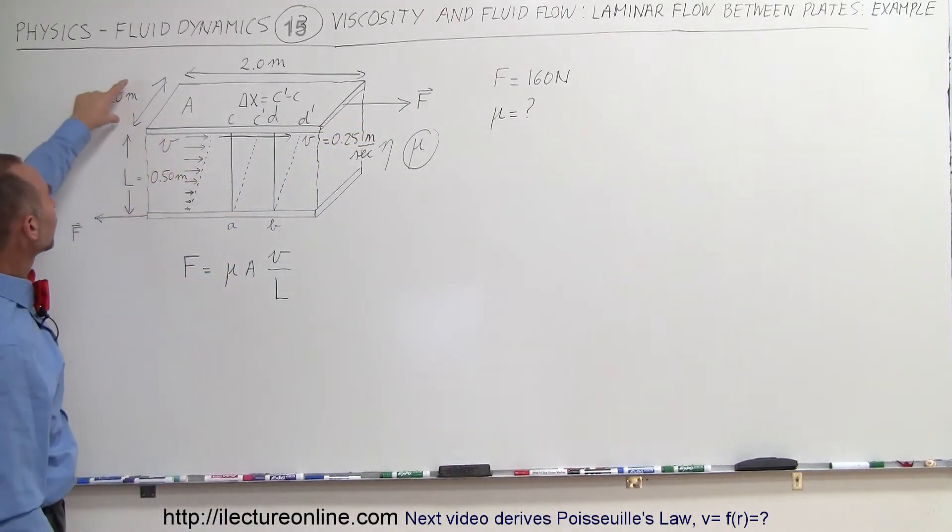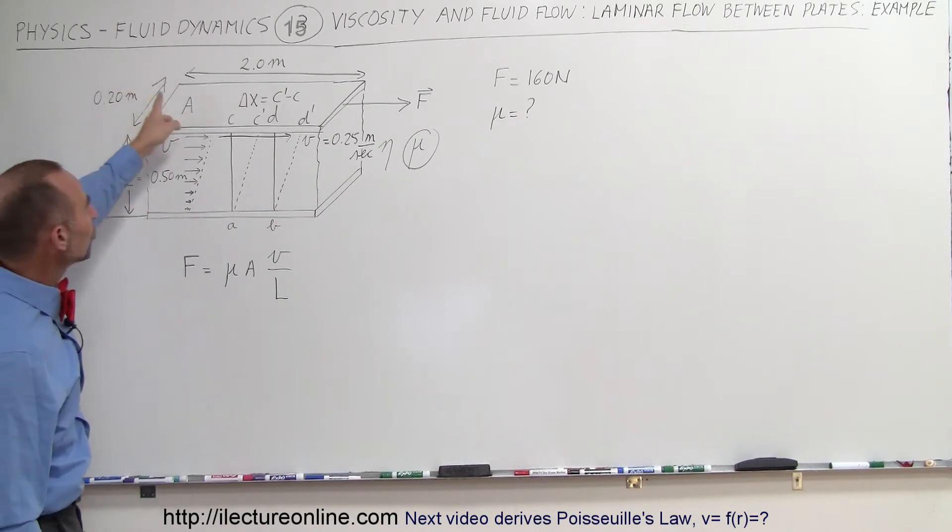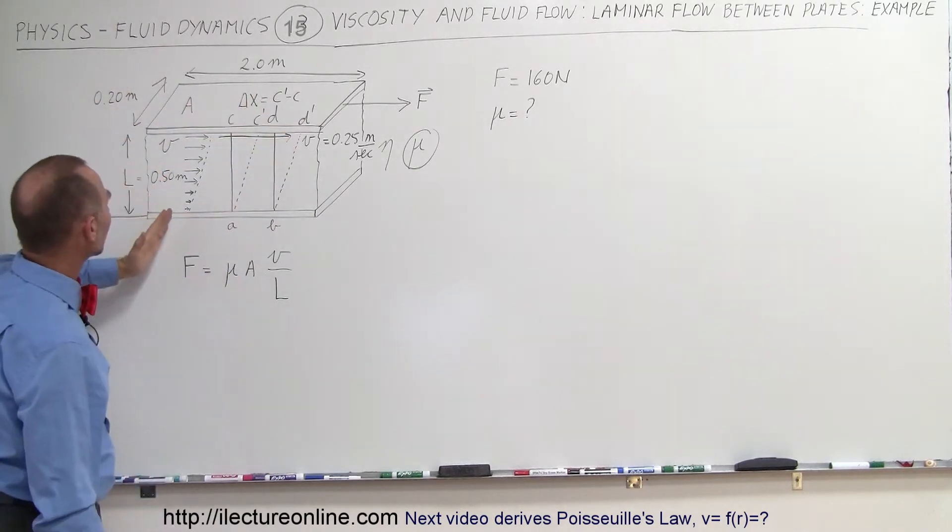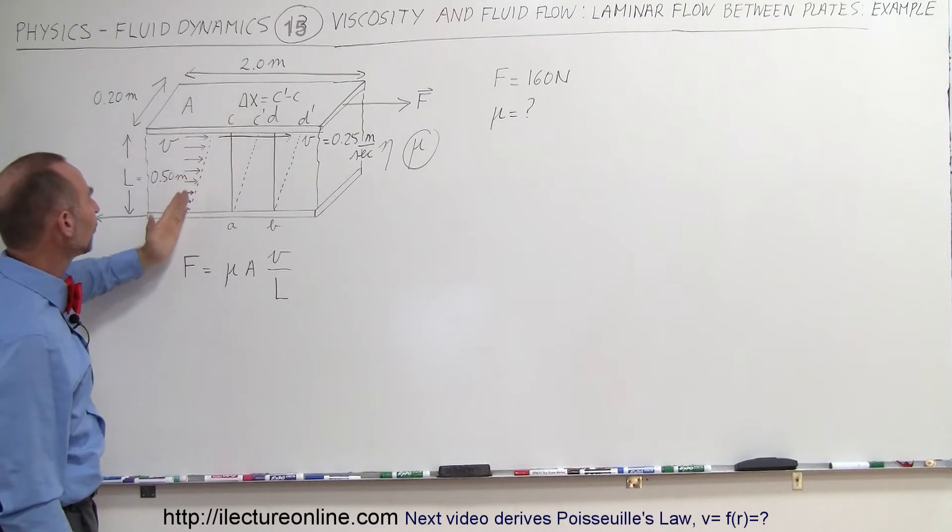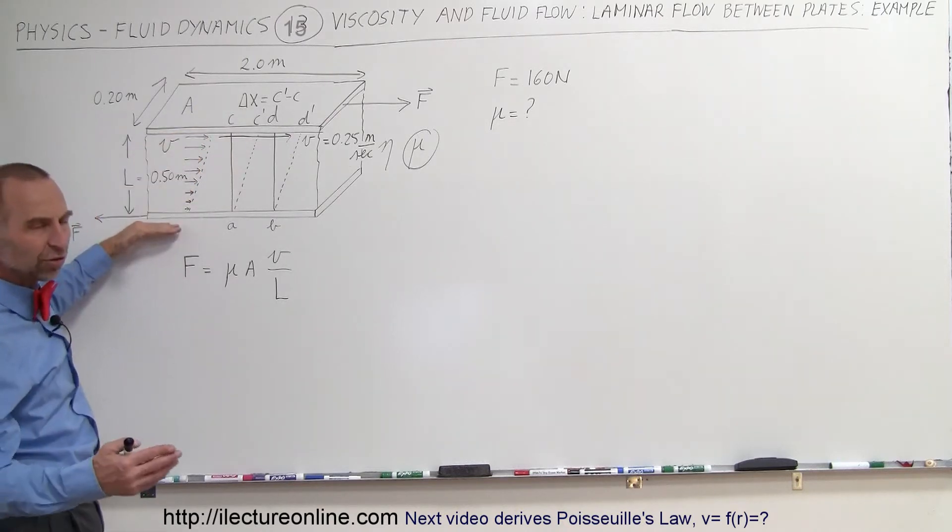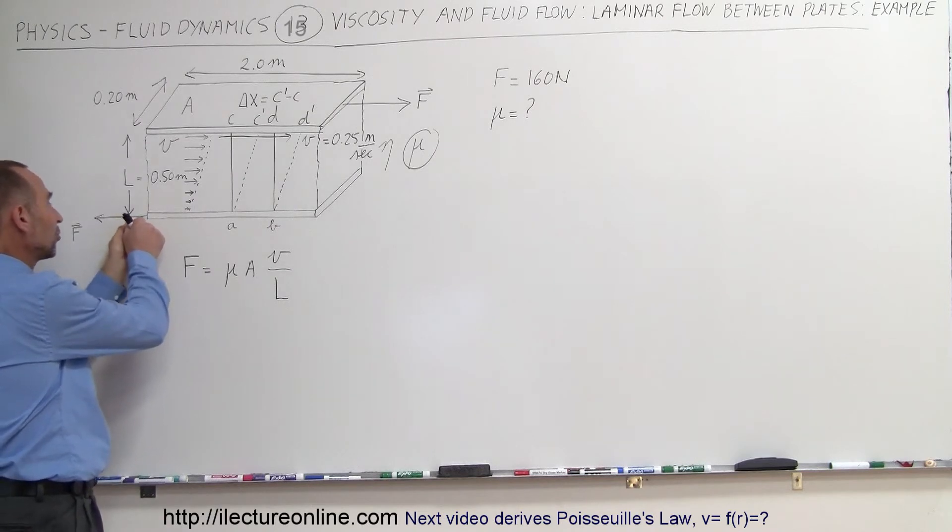The dimensions of the plate are 0.2 meters wide and 2 meters long. We can see that there's a linear change in the velocity of the fluid from the bottom to the top. The bottom plate will stay in place, although you do have to apply force so that the bottom plate does not move.